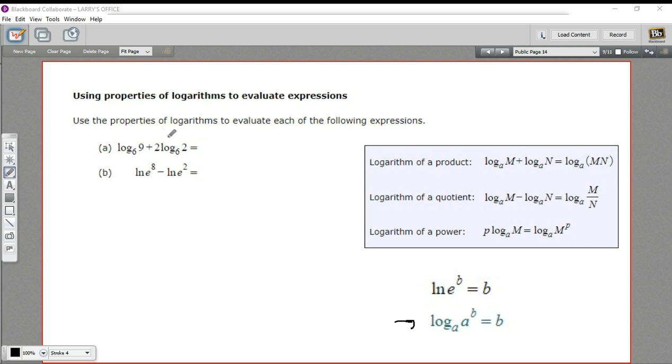Here, it looks like we have a pretty basic logarithm of a product thing. We've got a log base 6 of 9 plus, oh no, we have a 2 multiplied here. So we've got a 2 times log base 6 of 2. So I think first what I'll do is apply the logarithm of a power. And I'll take this 2 out here and raise the 2 to the second power. So I'll rewrite this whole problem now as log base 6 of 9 plus log base 6 of 2 to the second power, which is 4.